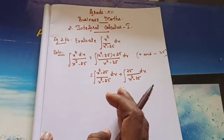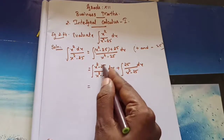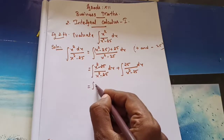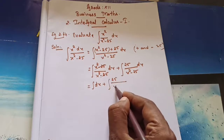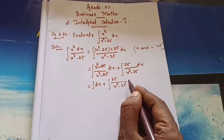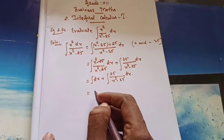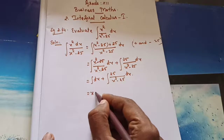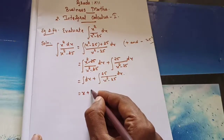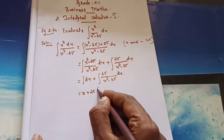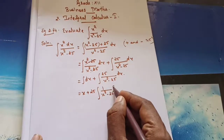We split this into two integrals. That is equal to — this term and this term will get cancelled. So the balance is: integral of dx plus 25 times integral of 1/(x² minus 25) dx. Here 25 is a constant so I take it outside.